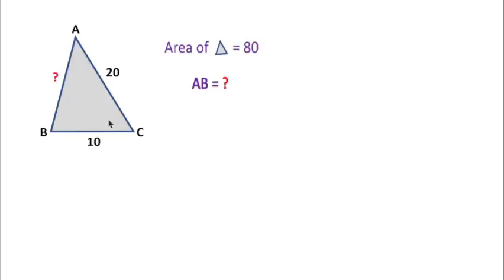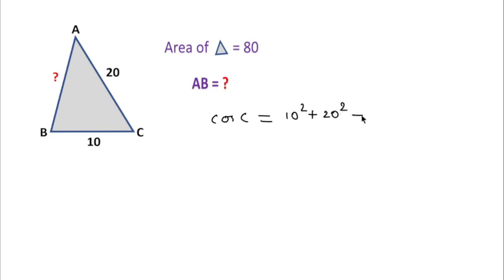Problem 2: In a triangle, AC = 20, BC = 10, and the area is 80. Find side AB. We will use the cosine rule. For angle C, cos C = (10² + 20² − AB²) / (2 × 10 × 20). However, we don't know cos C directly, so we need another approach.